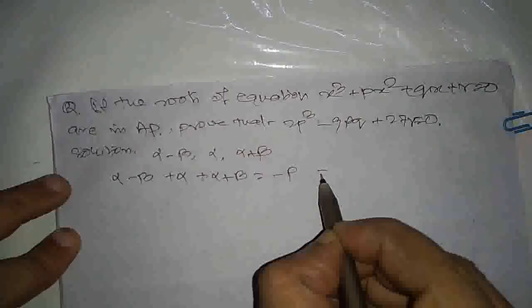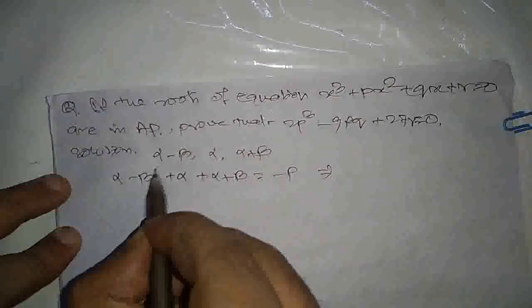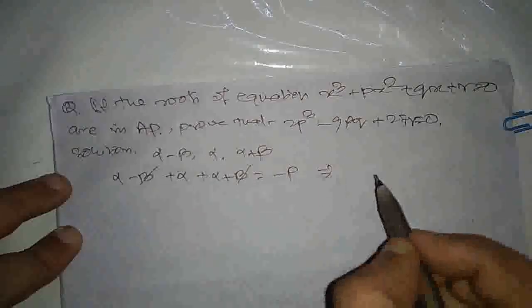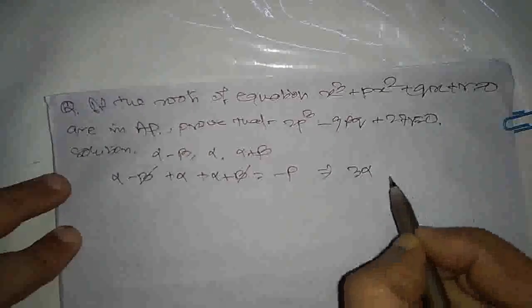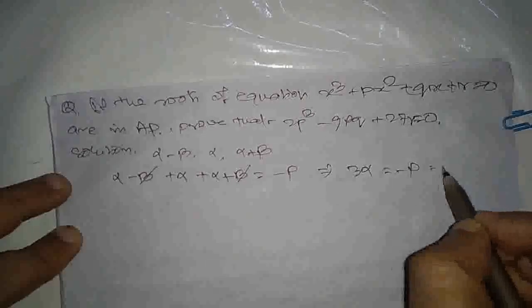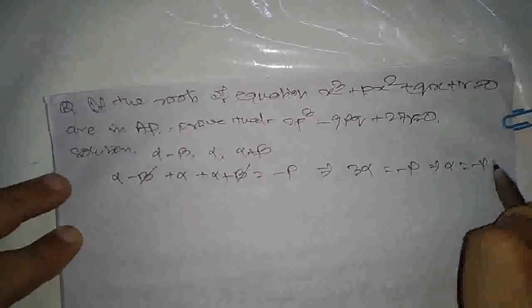This is what we can see. Beta and beta cancel. 3 alpha equal to minus p, or alpha equal to minus p by 3.